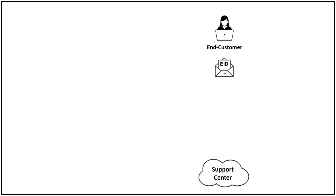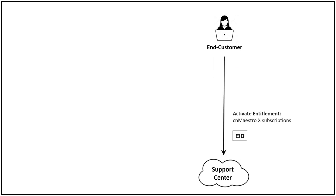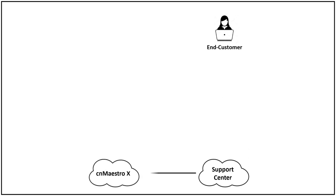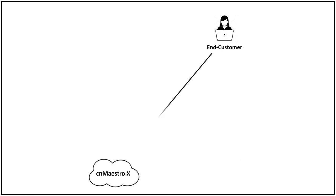To activate your service, go to the Cambium Support Center at support.cambiumnetworks.com. You'll navigate to the entitlement section of the site and paste the eID. You'll identify your CN Maestro account or create a new account. The Support Center sends the subscription activation to the CN Maestro account you identify or the new account you create. The number of slots you've subscribed to are then added to this account, resulting in upgrading your account to the more powerful functionality of CN Maestro X.